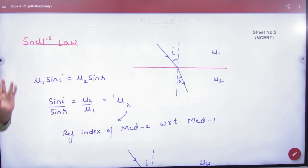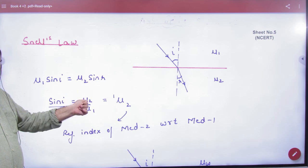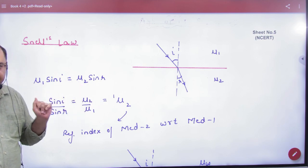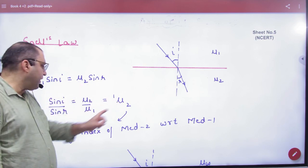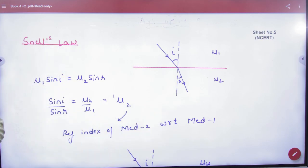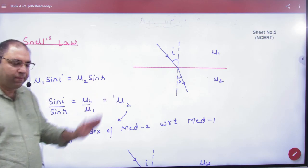μ1 sin i equals μ2 sin r. Cross multiply: sin i by sin r equals μ2 by μ1. μ2 is on top so it goes to the bottom, and 1 is on bottom so it comes to the top. This is called the refractive index of 2 with respect to 1. You read it as μ1 to 2, or μ of 2 with respect to 1.